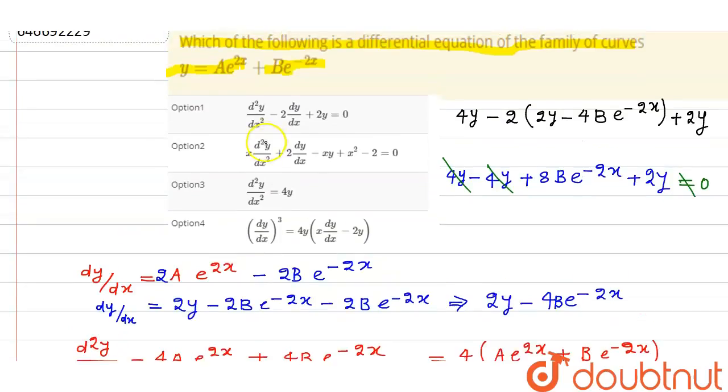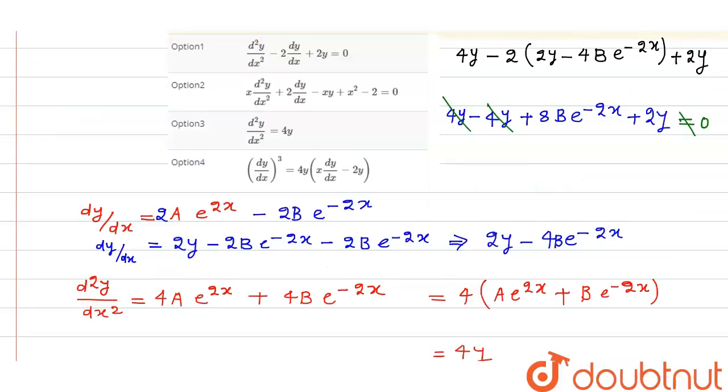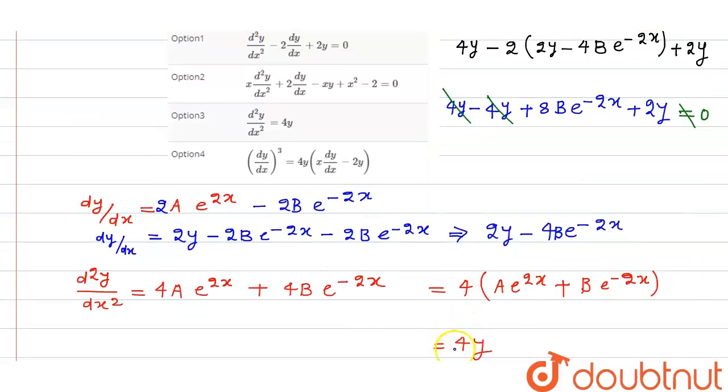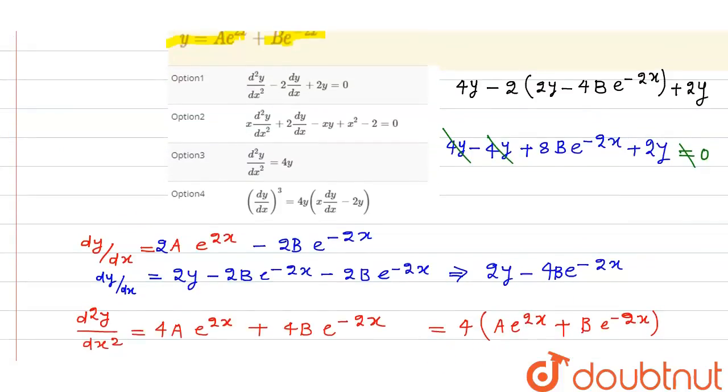Now talking about the second option, x d²y upon dx square. Since we have known that d²y upon dx is 4y, so this is 4xy.